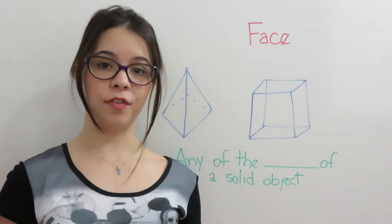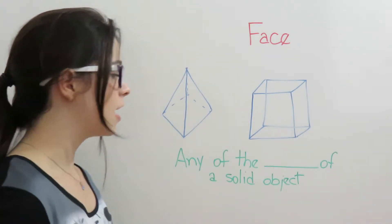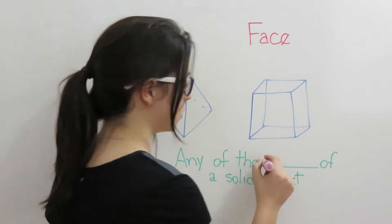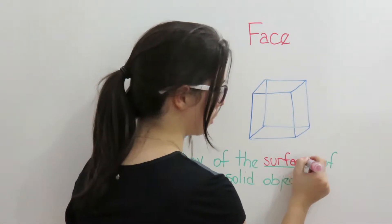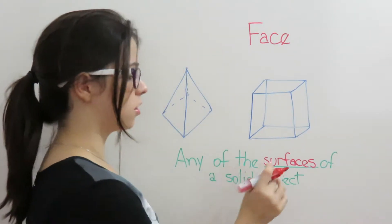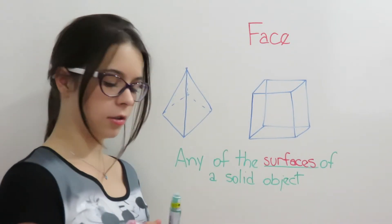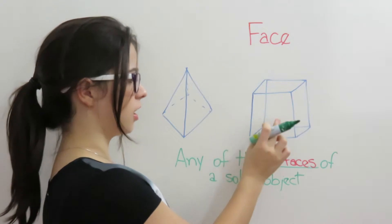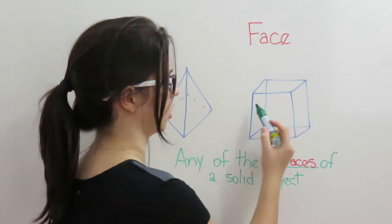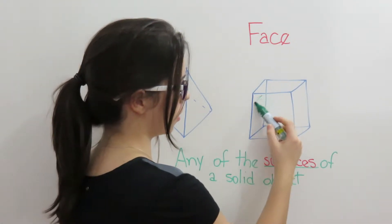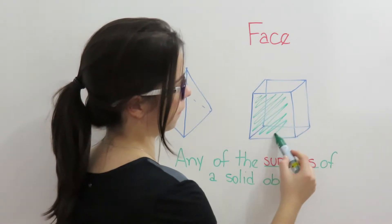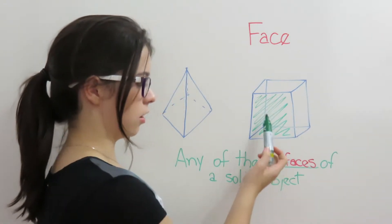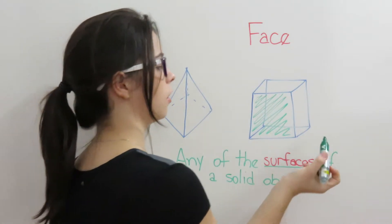So, the definition of face is any of the surfaces of a solid object. So here, in this representation of a solid object, this part here is one surface of the object.